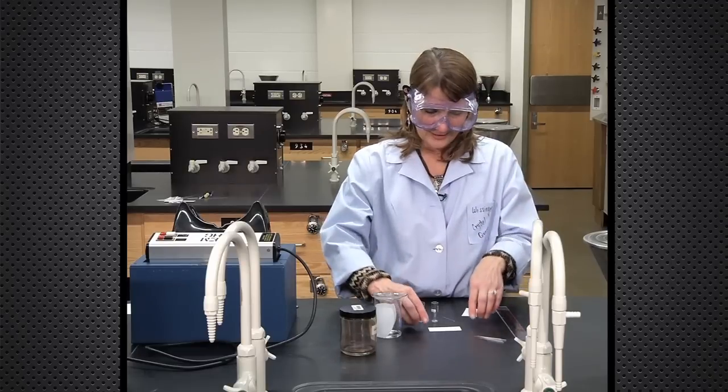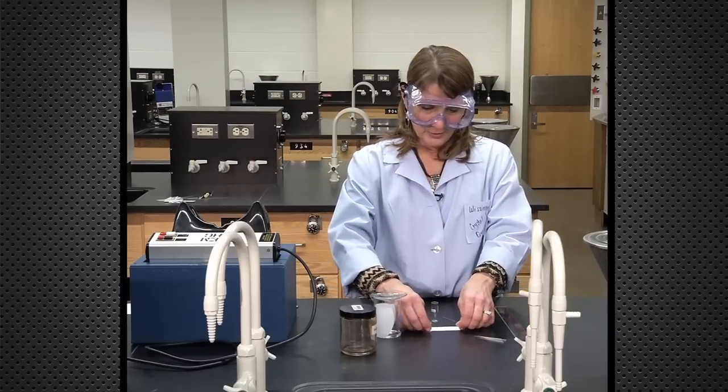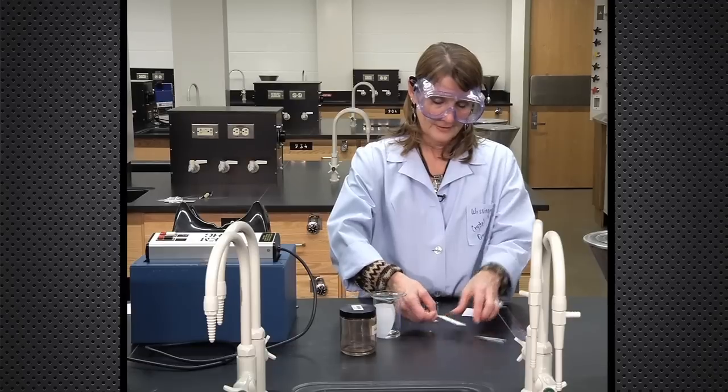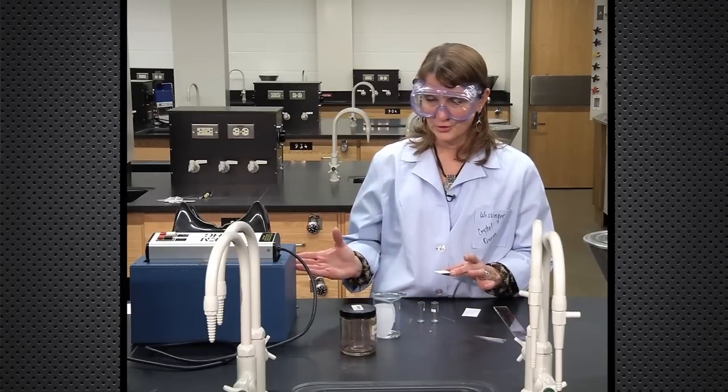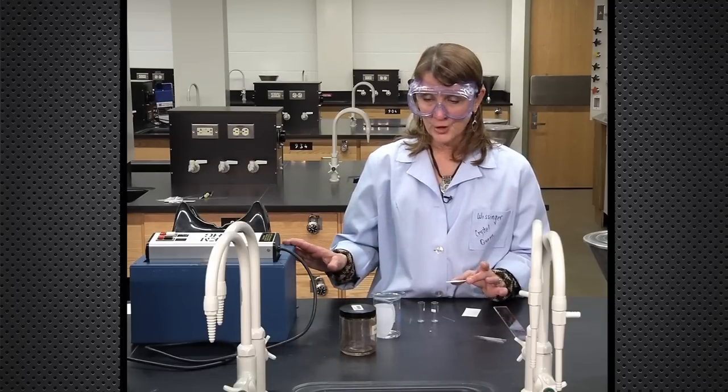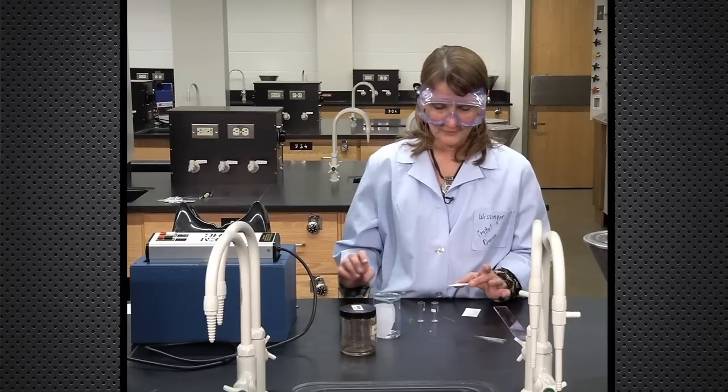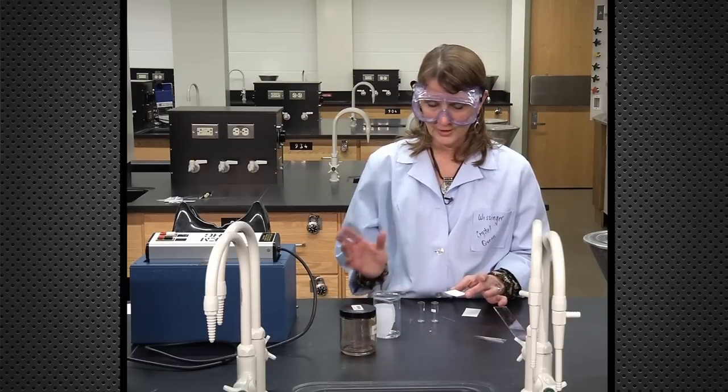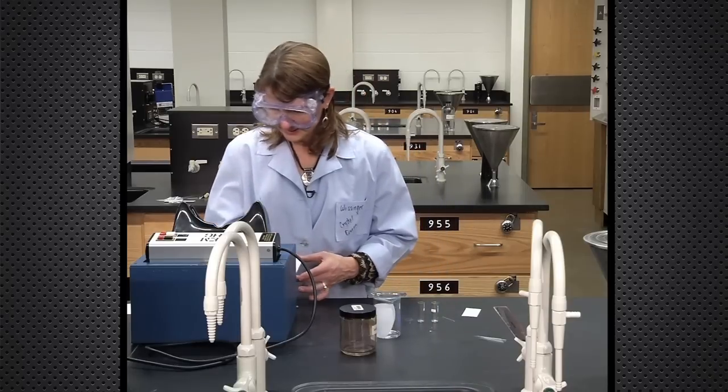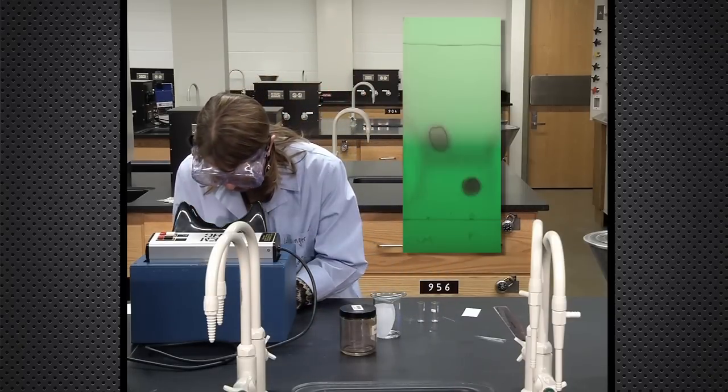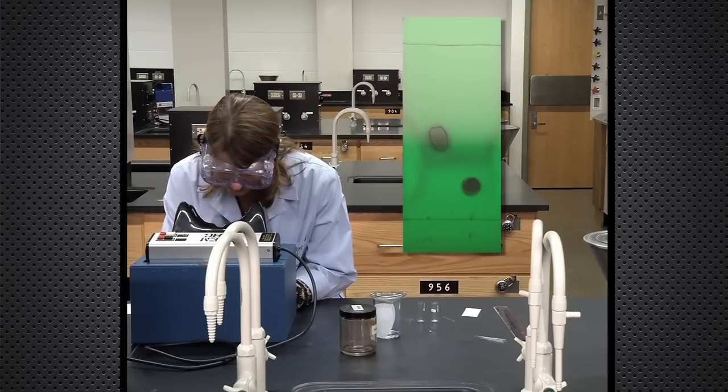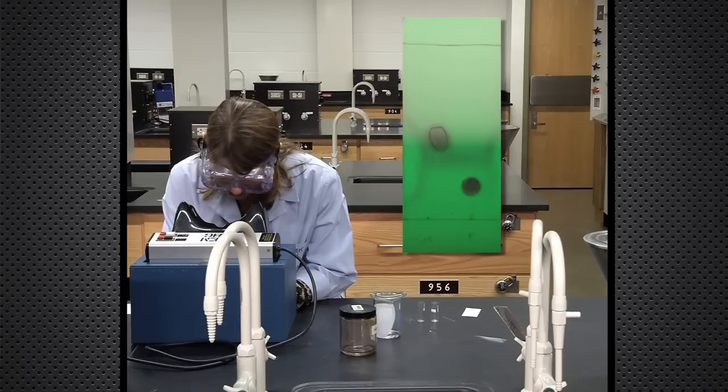Now the exciting moment has come where we're going to look at our TLC plate first under the UV lamp and then we'll put it in the iodine chamber. You want to do the UV lamp first so that the reaction of the iodine with the spots doesn't interfere with the UV visualization. So I'm going to put this under the UV light. Perfect. And circle each spot.